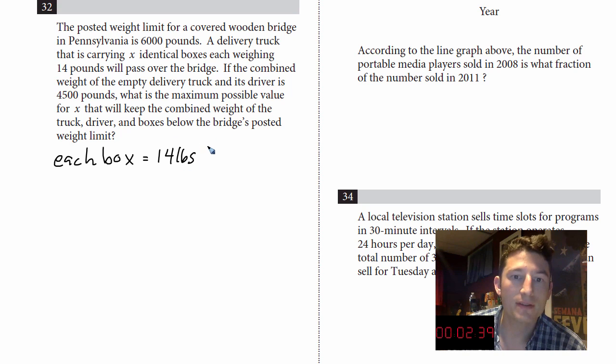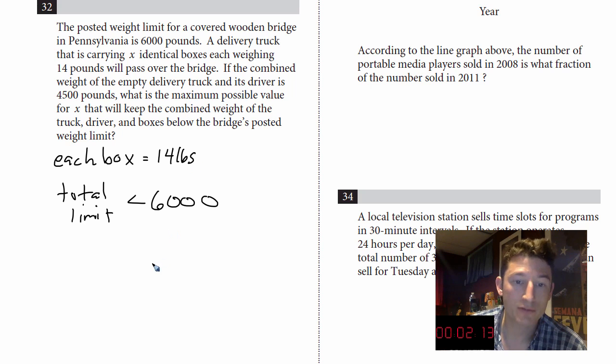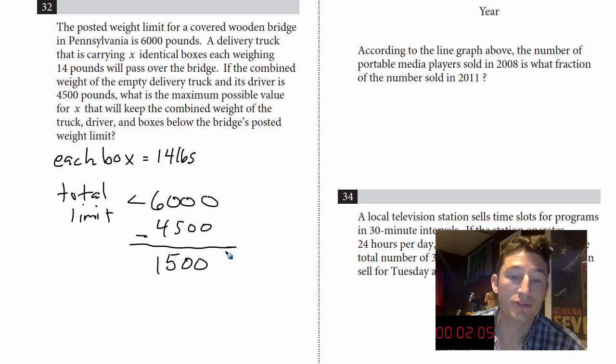If the combined weight of the empty delivery truck and its driver is 4,500 pounds, what is the maximum possible value for X that will keep the combined weight of the truck driver and boxes below the bridge's posted weight limit? So we need the total limit to be what? What did it say in the problem? 6,000. So less than 6,000 pounds. So we have to minus out the delivery truck. The weight of the delivery truck and the driver is 4,500. So we're going to minus from 6,000, 4,500. So we know that the boxes have to weigh at most, excuse me, at most 1,500.